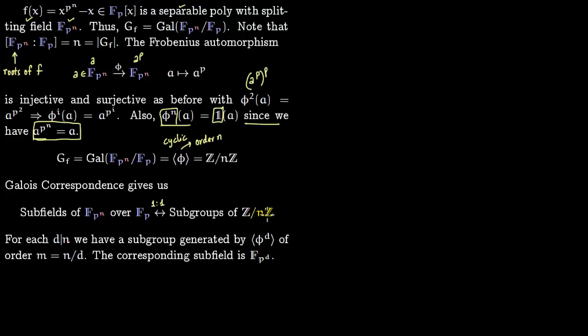From group theory, for each divisor d of n, every number which divides n, we have a subgroup generated by phi^d. This subgroup has order m which is m = n/d.